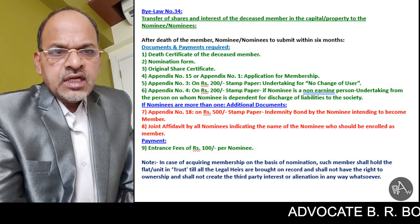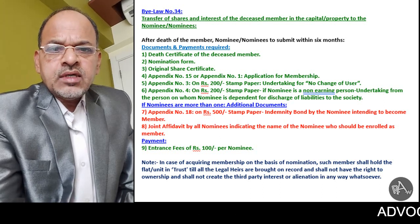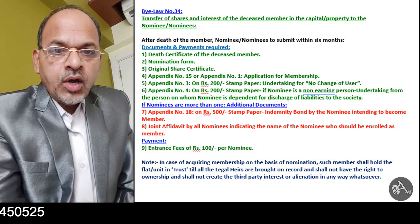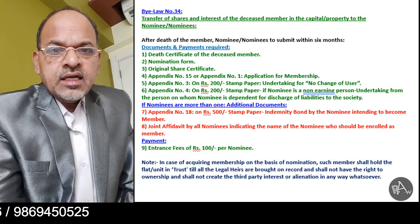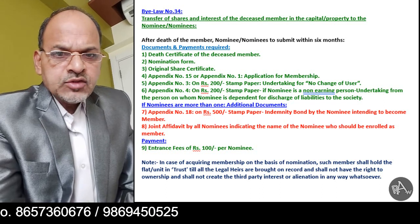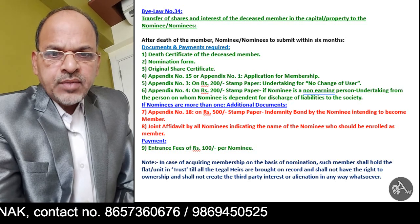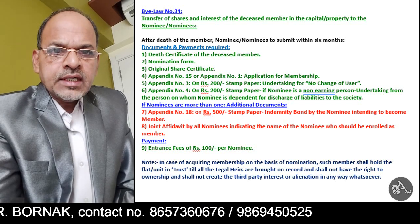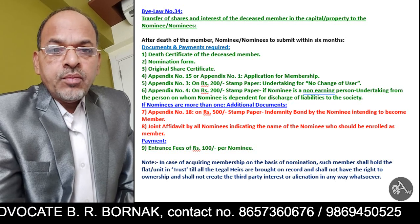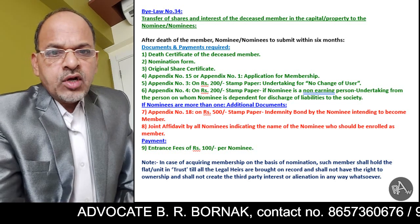If there are more nominees, appendix number 18 on rupees 500 stamp paper is required. And they will also have to submit collectively a joint appendix on rupees 200 stamp paper by all nominees, mentioning therein that a particular nominee will become member of the society, the names of the other nominees will be recorded after his name, and they have no objection to admit that particular person as a member of the society. This joint appendix is required in case where there are more nominees than one.